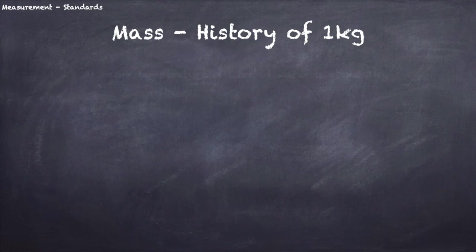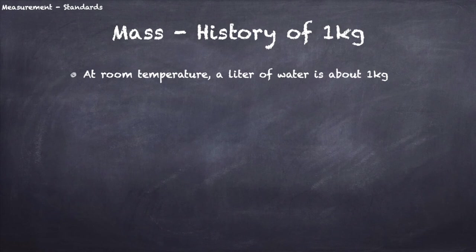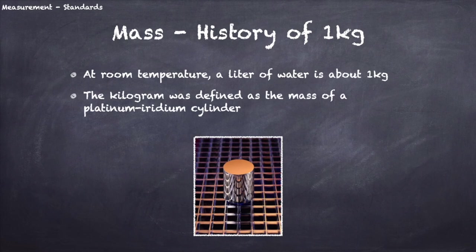At room temperature, a liter of water has a mass of about 1 kilogram. This is no coincidence because that is pretty much how the kilogram was originally defined. The kilogram is also the only SI unit that has a prefix kilo for historical reasons. In 1889, the kilogram was redefined as the mass of a platinum iridium cylinder kept at the International Bureau of Weights and Measures.